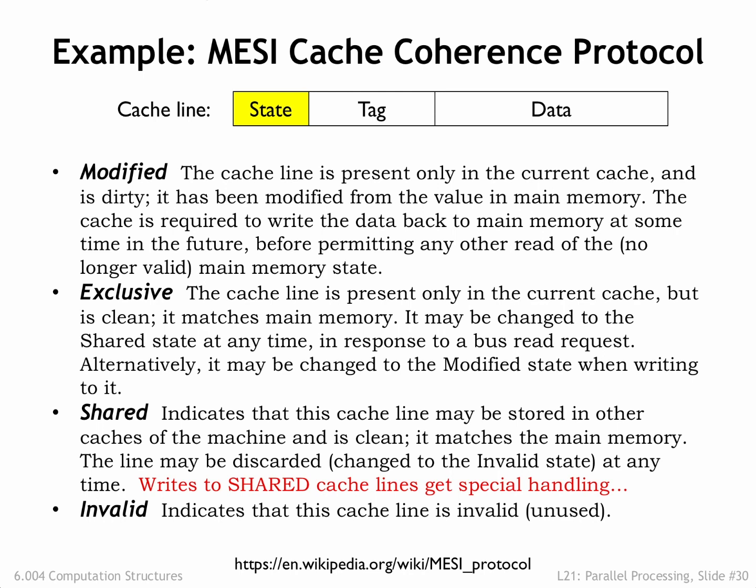Writing to a cache line is when the sharing magic happens. If there's a cache miss, the cache first performs a cache line read as described above. If the cache line is now in the shared state, a write will cause the cache to send an invalidate message on the snoopy bus telling all other caches to invalidate their copy of the cache line, guaranteeing the local cache now has exclusive access. If the cache line is in the exclusive state when the write happens, no communication is necessary. Now the cache data can be changed and the cache line state set to modified, completing the write.